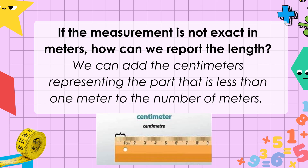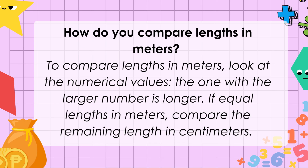If the measurement is not exact in meters, how can we report the length? We can add the centimeters representing the part that is less than one meter to the number of meters. To compare lengths in meters, look at the numerical values — the one with the larger number is longer. If lengths in meters are equal, compare the remaining lengths in centimeters.